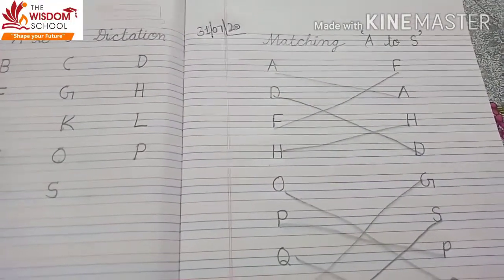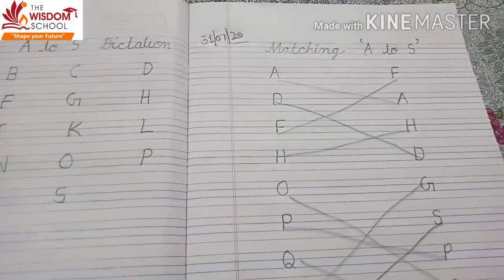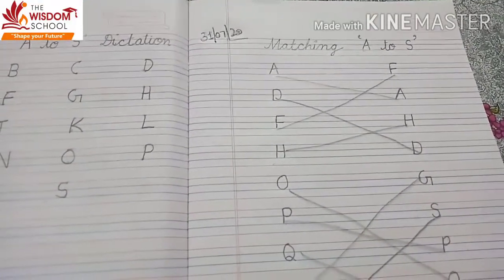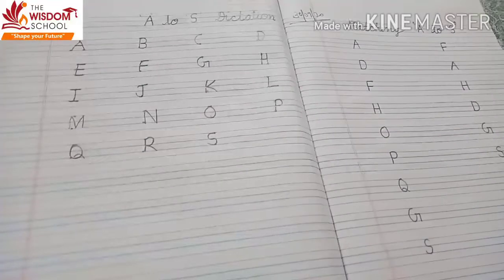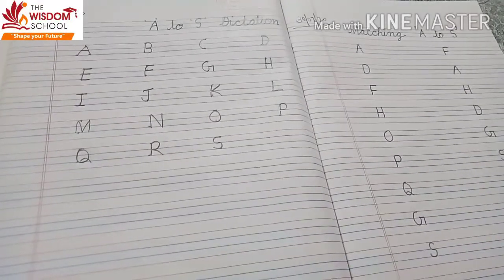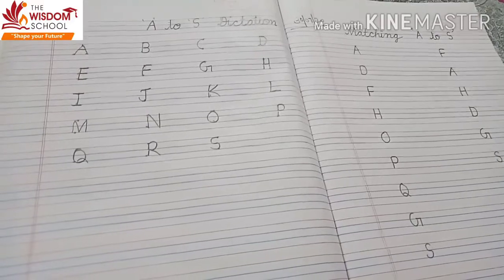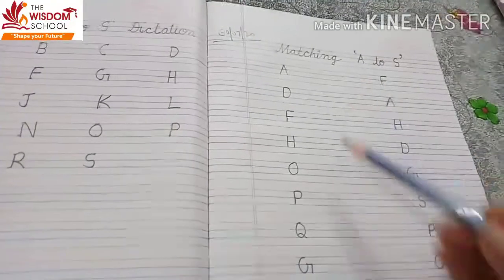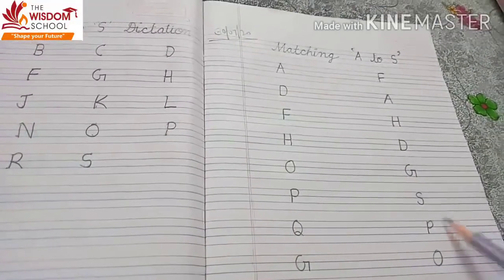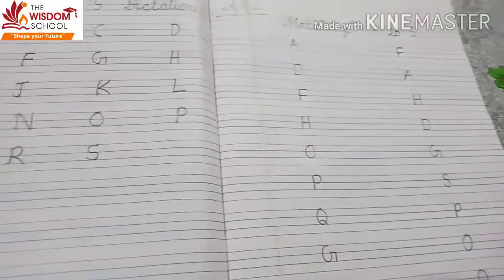Students, previous video में हमने A to S sound matching की थी। I hope आप सब ने की होगी। Now in this video, we will revise again A to S sound. English में, previous video में हमने A to S dictation की थी। हमने इसे two times revision भी कर चुके हैं। I hope अब आपको A से S sound clear होगी। Now in this video we will do match — A to S sound. हमने one side sound write की है और one side इसे। हमें अब sound को identify करना है और same sound के साथ match करना है। Okay, let's start.